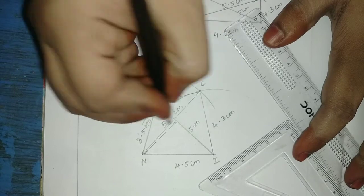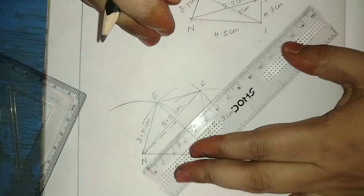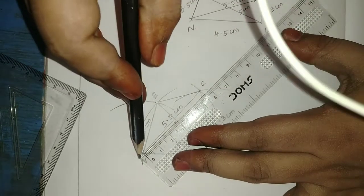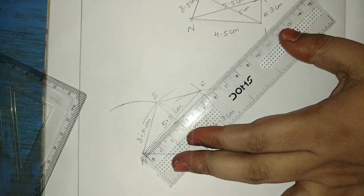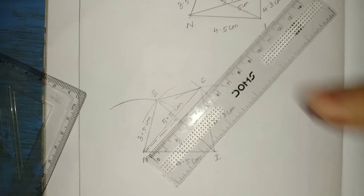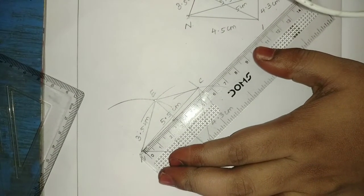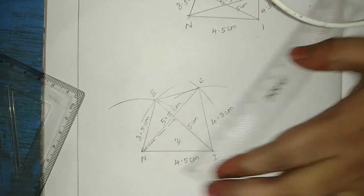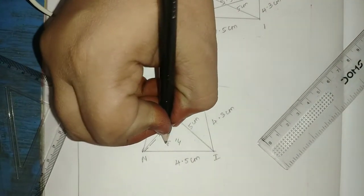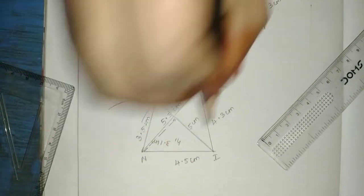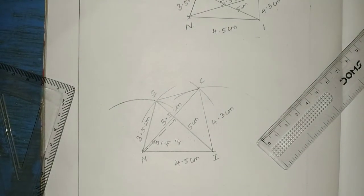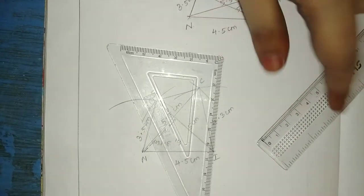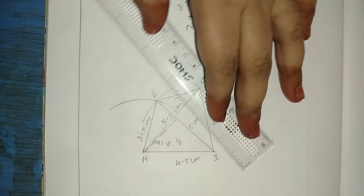So this is H1. H1 — how do you measure it? Here is the correct measure. If you measure it, it is 3.1 cm. This is H1. There is a minor difference — it is not a problem, it is not major.